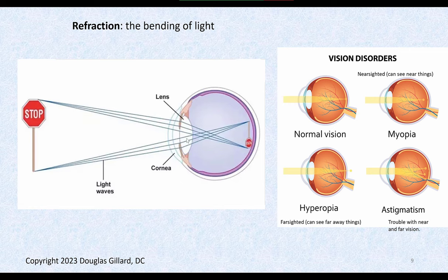The cornea and lens are both responsible for bending light, but the cornea is by far the most important. If you have a perfect cornea, you'll typically have really good vision. Some people have irregular waves in their cornea — not perfectly concave — and that's called astigmatism. If the light rays are not refracted correctly, or if the eyeball is too long, various vision problems result.